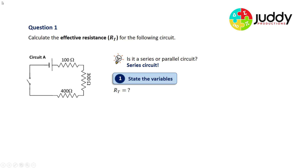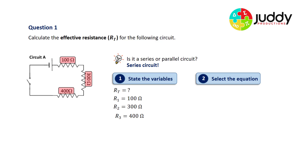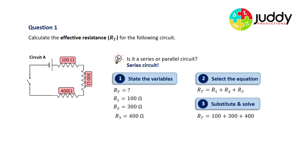Let's state the variables. We wish to find the total or effective resistance RT. R1 is 100 ohms, R2 is 300 ohms, and R3 is 400 ohms. For a series circuit, the total resistance is simply the sum of the individual resistors. Substituting our values in: RT equals 100 plus 300 plus 400, giving a total of 800 ohms. So the effective resistance for circuit A is 800 ohms.